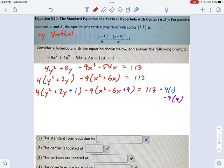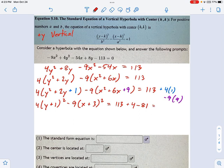Now take a look at what happens once I factor these out. It'll make more sense why I chose those numbers. y plus 1 squared, and then I have minus 9, and this perfect square is going to be x plus 3 squared. On this side I still have 113 plus 4 minus 81. So what do we get there? That's going to be some math. Let's see. Calculator time. 113 plus 4 minus 81, that's 36.